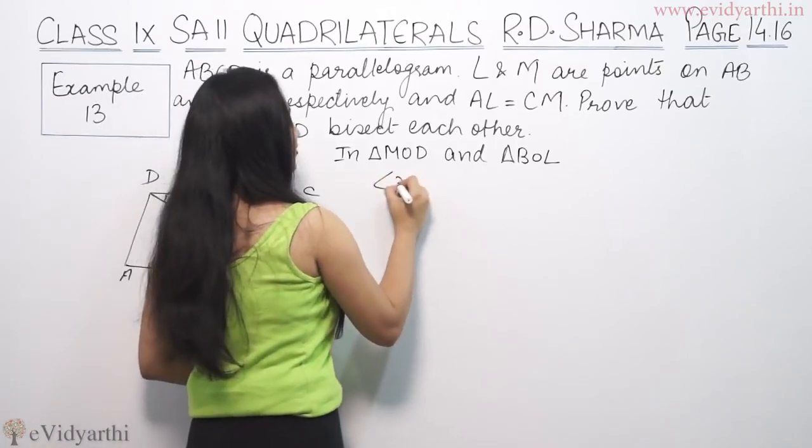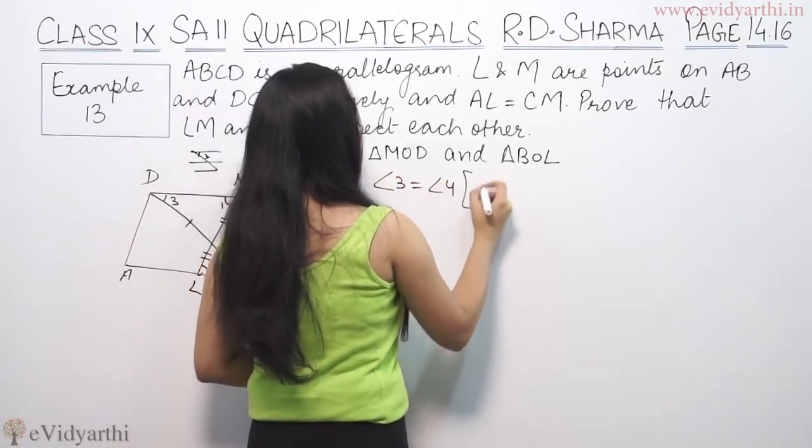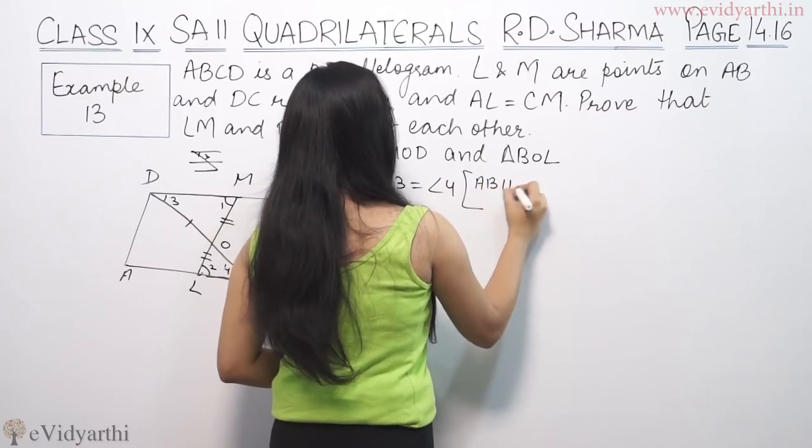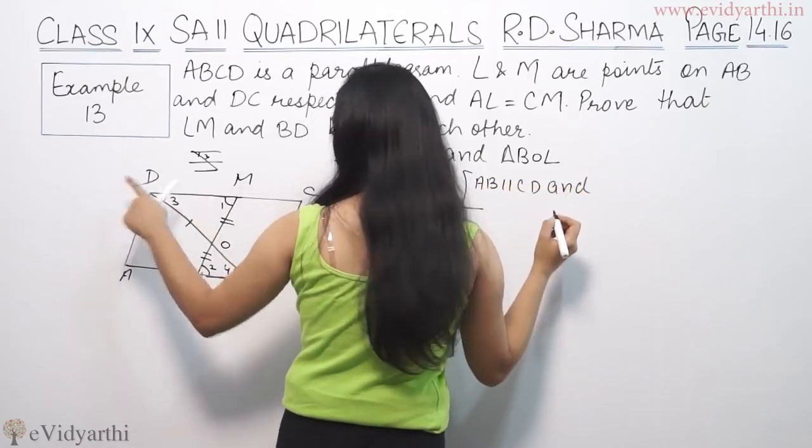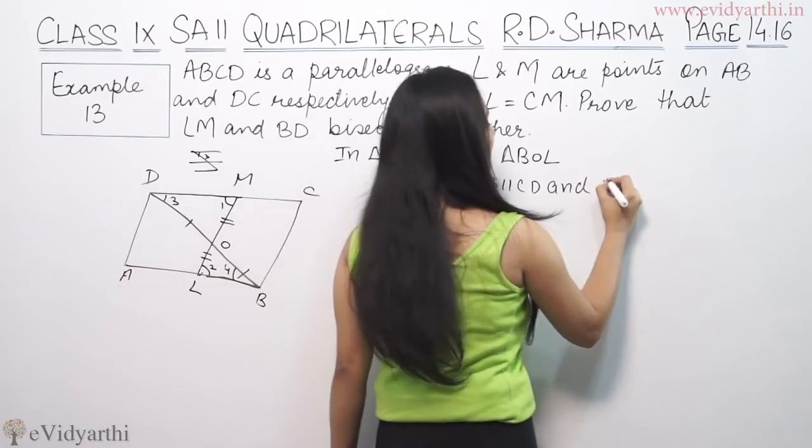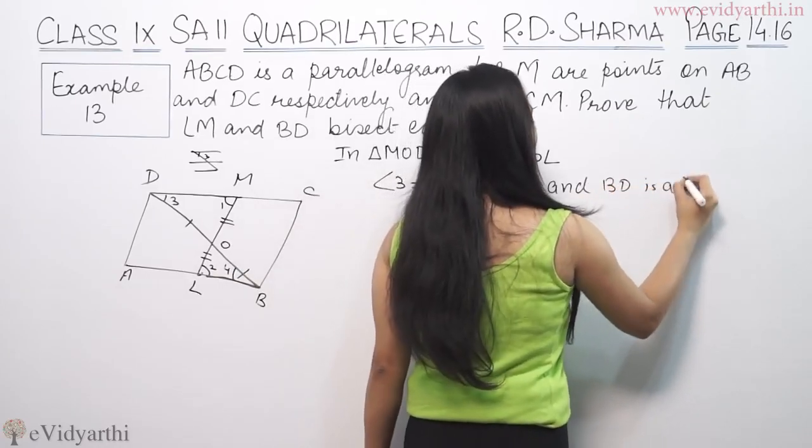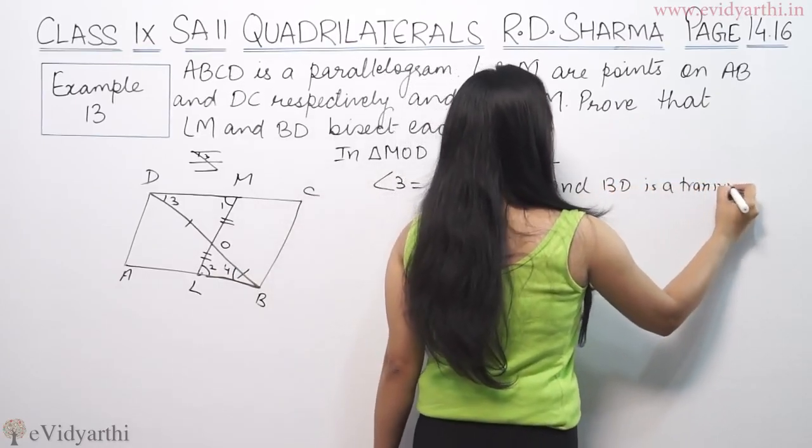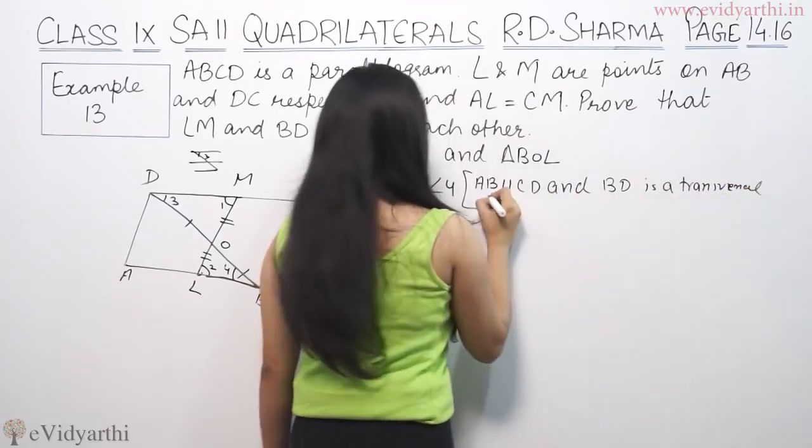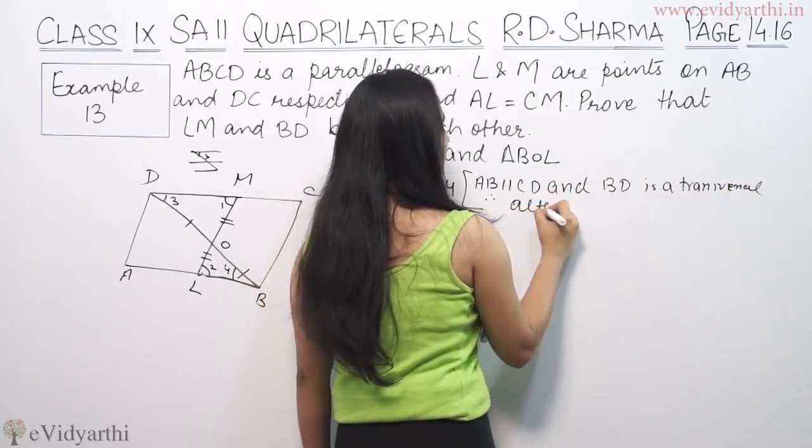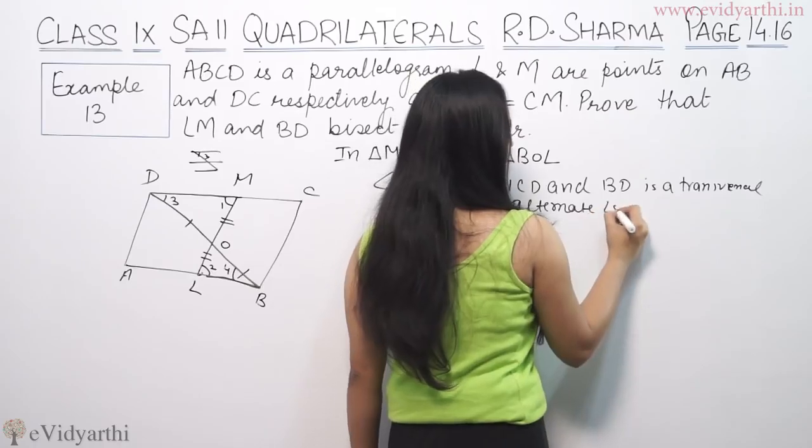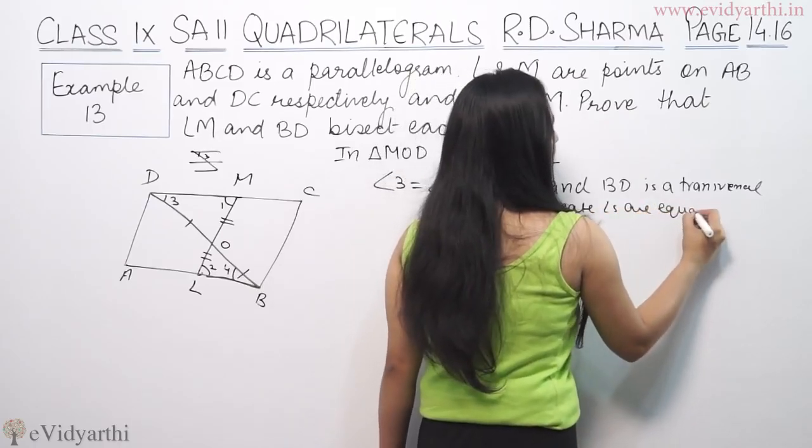So angle 3 is equal to angle 4, the reason being AB is parallel to CD and BD is a transversal. Therefore alternate angles are equal.